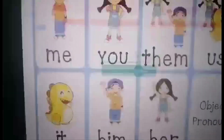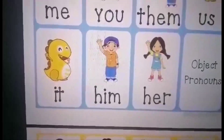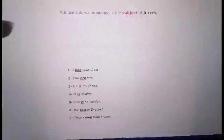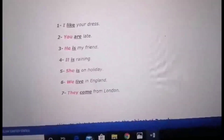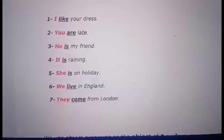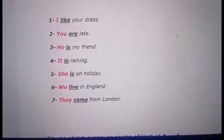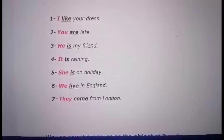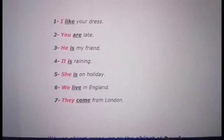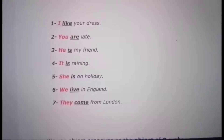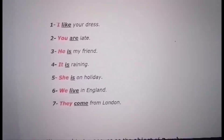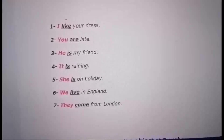Now look at where we use the pronouns as a subject of the verb. Look at the examples here. As you know: subject, verb, object. You can see here — I is the subject, the first part of the sentence. The underlined is the verb. Example one: I like your dress.